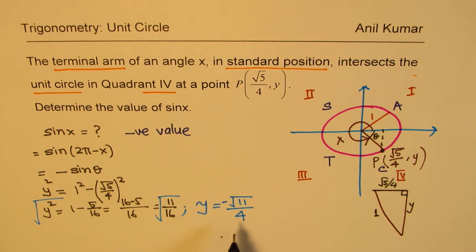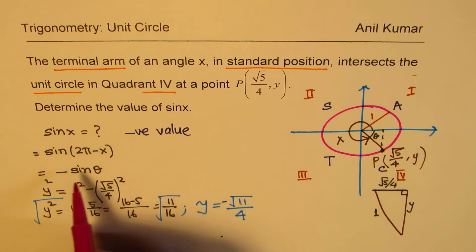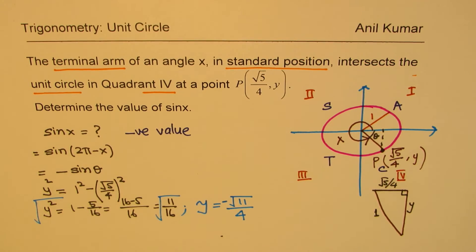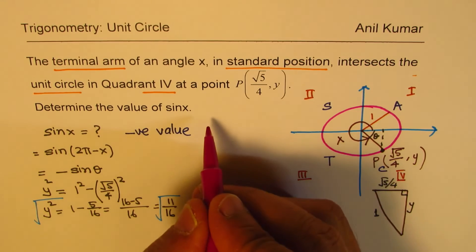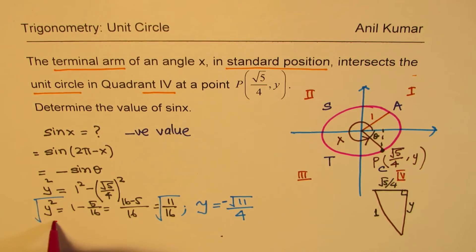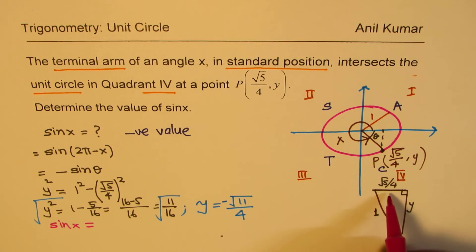So from here, we can write down what is sine of this angle X. We can write sine of X. There was no need to do all this also. We could directly write sine of X. So sine of X basically is equal to what?